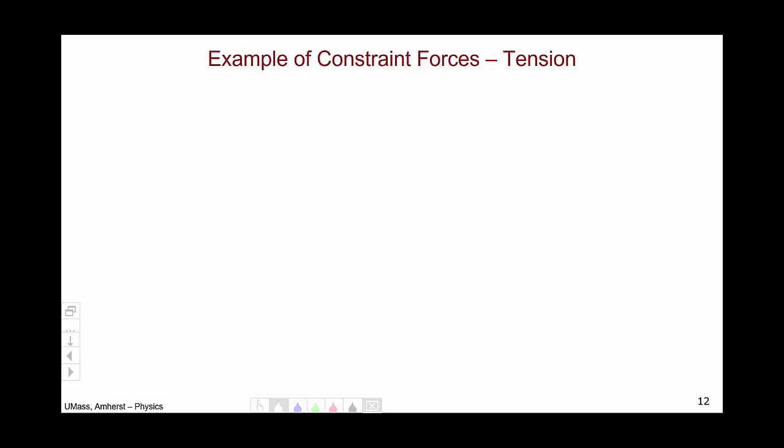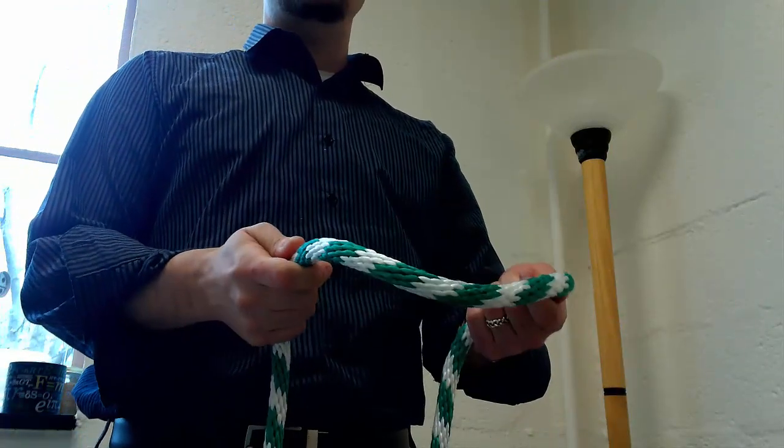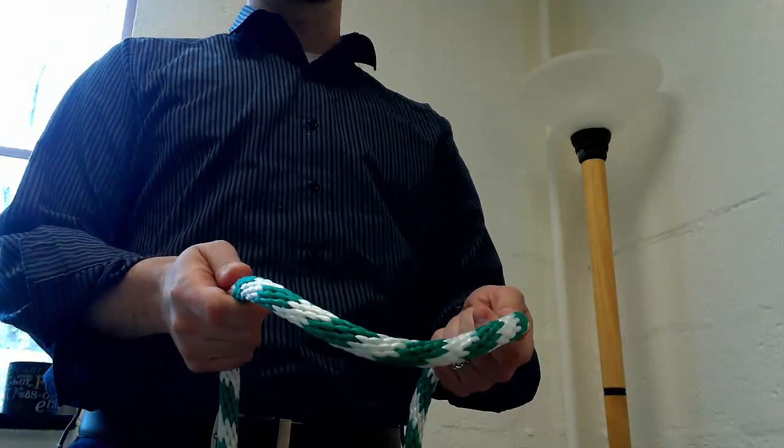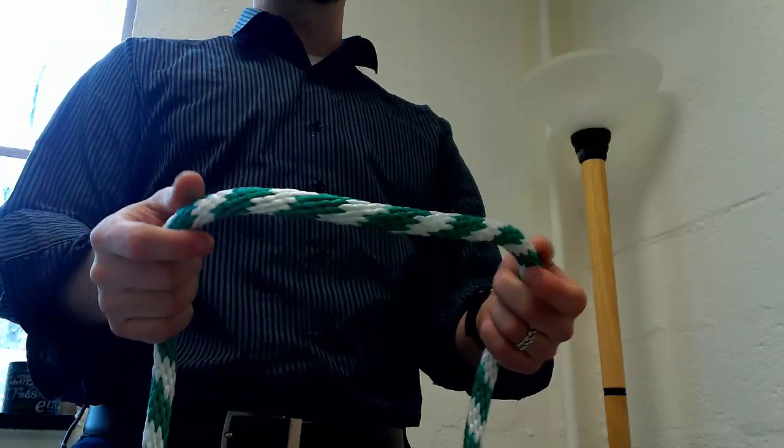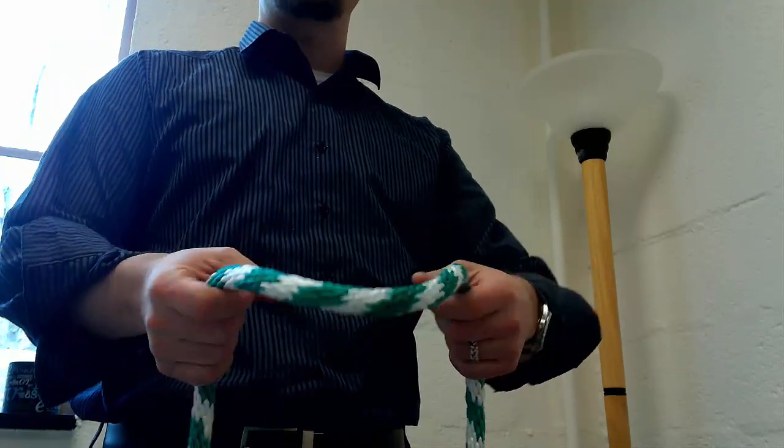So let's look at tension as an example of a constraint force. Here, I'm going to be using the tension in this rope as a model for the constraint force. So when the rope is loose and slack, there's essentially no tension in the rope.